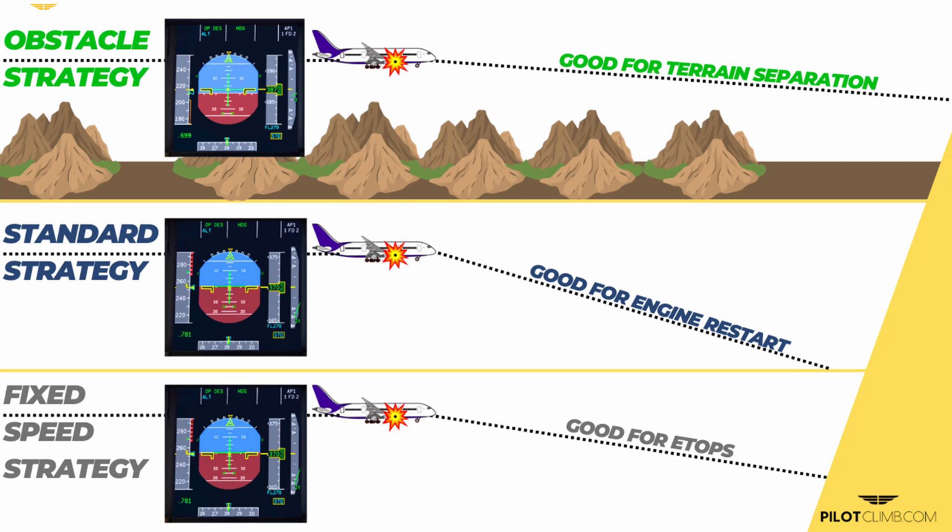The fixed speed strategy is typically used in ETOPS operations, where you use a specific speed to start the drift down in order to divert somewhere else. The important thing to understand and remember — especially if asked during a pilot job interview — is that if you have an engine failure, you identify the failure, but you don't deal with the failure first. The golden rule is always: fly the aircraft. Make sure the flight envelope is safe, start the descent, deviate, and inform ATC. Once everything is under control, then you take care of the engine failure.